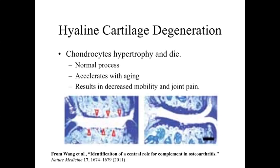At joint cavities, cartilage is found along the articular surfaces. Importantly, at articular regions where two bones come together, there is no perichondrium present — one of the few locations in the body without an epithelial or perichondrial lining, leaving free hyaline cartilage along the surface. This provides a smooth articulation surface so bones can move in relationship to one another. When bones are compressed, the cartilage can be squeezed and fluid expressed, but when pressure is removed, water is drawn back in — providing a functional joint space.